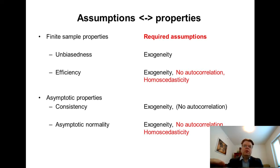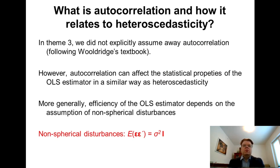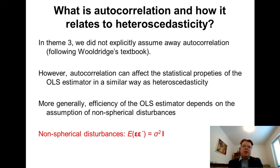Let me clarify what autocorrelation is. Looking back at the lessons of theme number three, I noticed that we didn't explicitly assume anything about autocorrelation — it was actually not mentioned in the list of assumptions, which I adopted from Jeff Wooldridge's textbook. But in some sense autocorrelation is also part of the classic Gauss-Markov assumptions. Autocorrelation has a very similar effect on the statistical properties of the OLS estimator as heteroscedasticity. To clarify the connection, I want to introduce the more general assumption of so-called non-spherical disturbances.